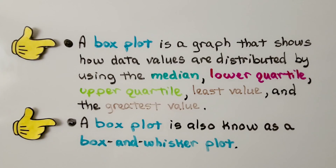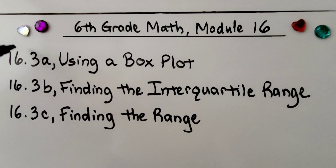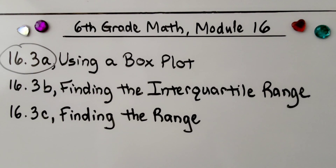For your notes: a box plot is a graph that shows how data values are distributed by using the median, lower quartile, upper quartile, least value, and greatest value. A box plot is also known as a box and whisker plot. Now we're finished with the first part of this lesson and we're going to move on to the second part — finding the interquartile range.